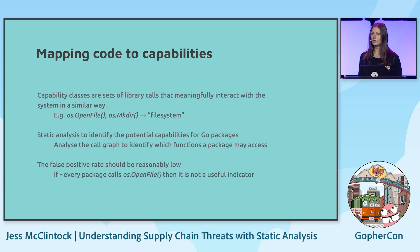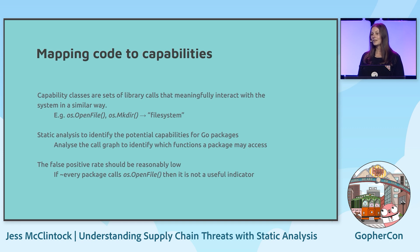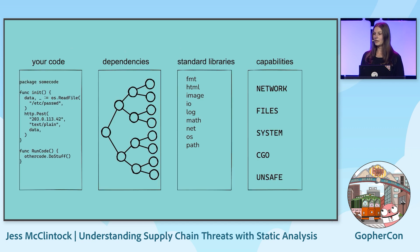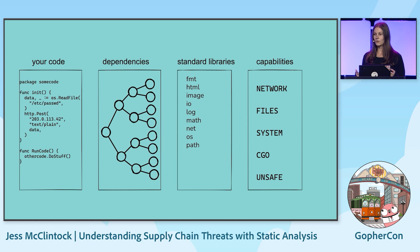To go into how we're mapping code to capabilities: we're classifying functions in the standard library as having particular capabilities. For example, if you're opening a file or making a directory, this would have a file system type capability. Then we're using call graph analysis to identify all the call paths from a package through any transitive dependencies to these standard library functions, to identify which capabilities are potentially accessible by a given package. Your code has a potentially large set of dependencies, but all call paths eventually end at the standard libraries.